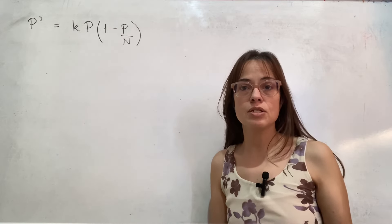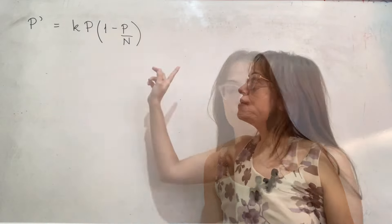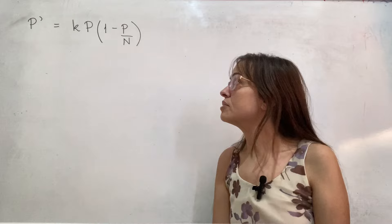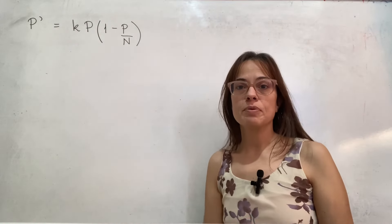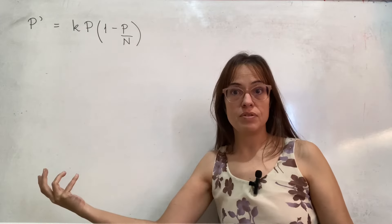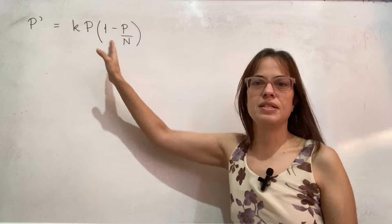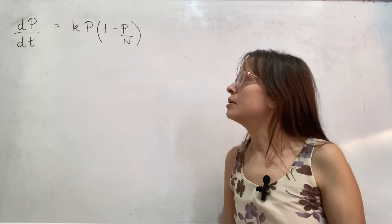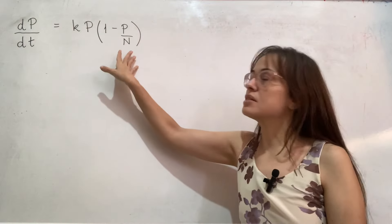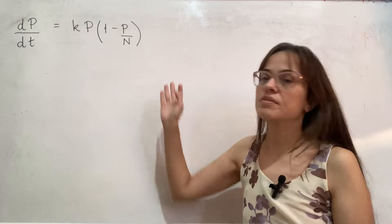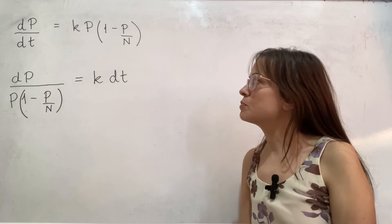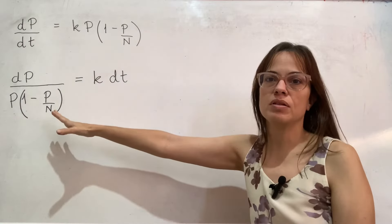Separation of variables is the easiest one if you are comfortable with integration, and that specific equation has appeared twice — they seem to like it a lot. The constants were in slightly different places but it's essentially the same thing. Separation of variables happens when you can separate the independent variable on one side and the dependent variable on the other side.